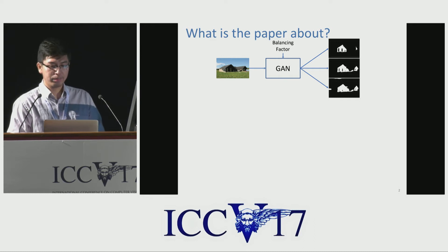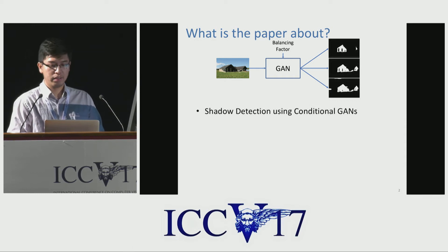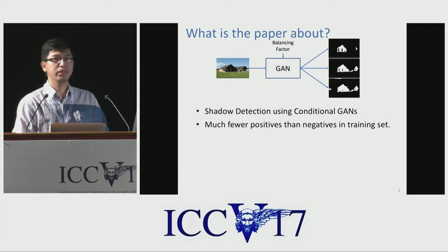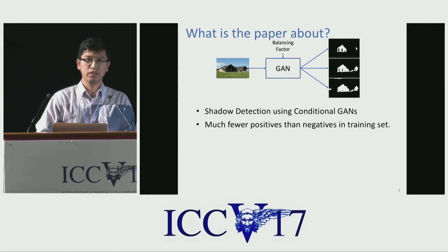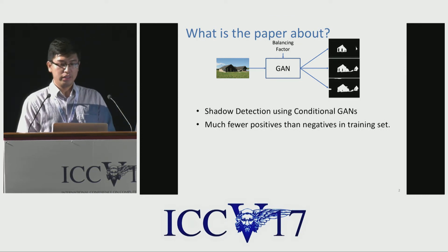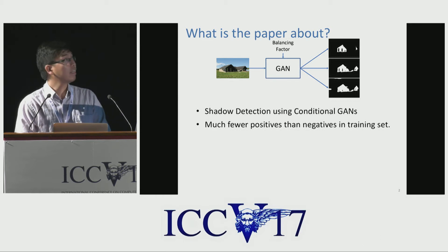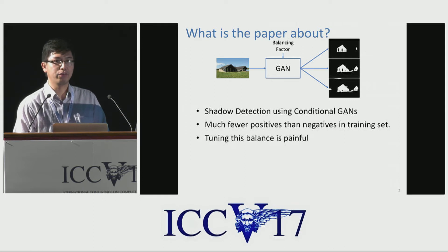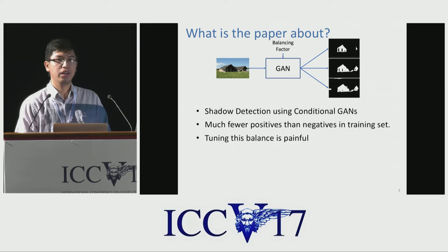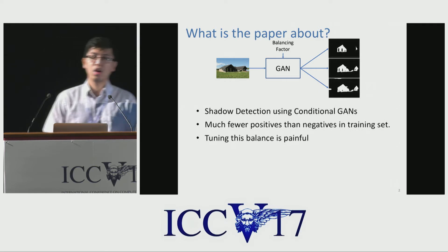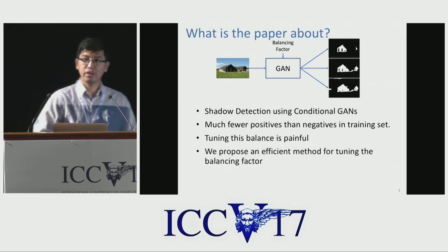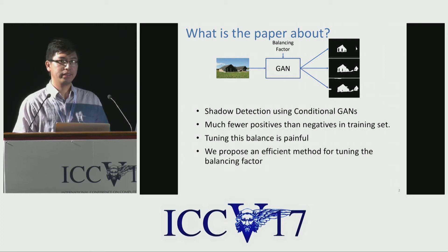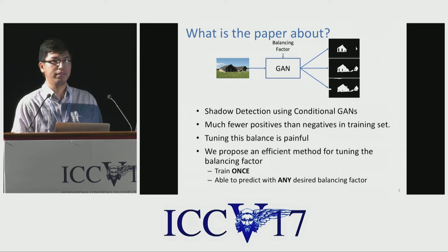In this paper, we perform shadow detection using conditional GANs. But there is a problem: in most cases, in an image there will be much more non-shadowed regions than shadowed regions. As a result, the amount of non-shadowed training data is much larger than the amount of shadowed training data. Therefore, we need to balance these two classes during training. However, the process of tuning this balance is very painful, because whenever you want to try a new balancing factor, you have to retrain the whole network again, which may take more than a day. So in this paper, we propose an efficient method to tune the balancing factor, in which you just need to train once, but you will be able to test with any balancing parameter value during prediction time.